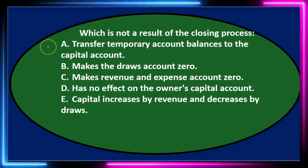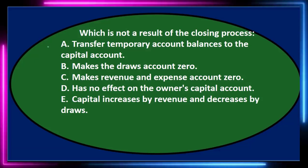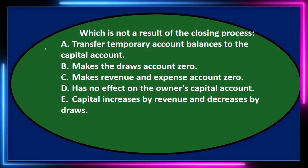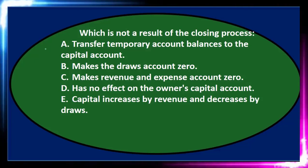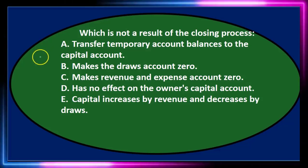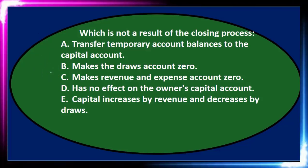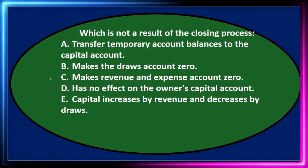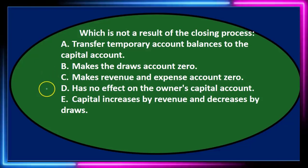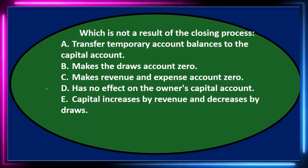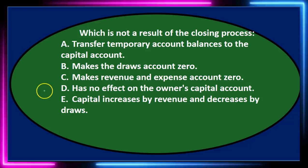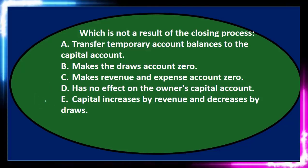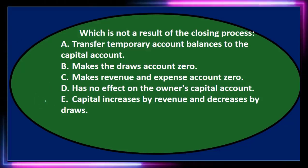First question: which is not a result of the closing process? A. Transfer temporary account balances to the capital account. B. Makes the draws account zero. C. Makes revenue and expense accounts zero. D. Has no effect on owner's capital account. And E. Capital increases by revenue and decreases by draws.